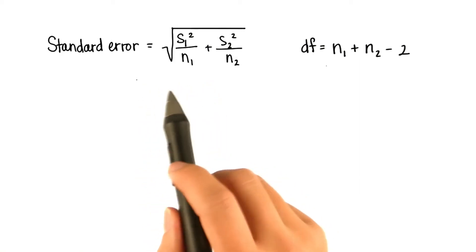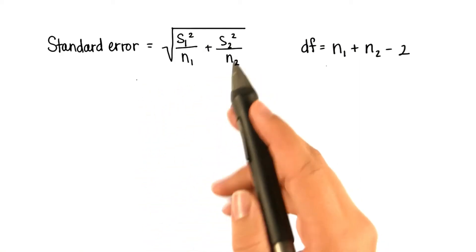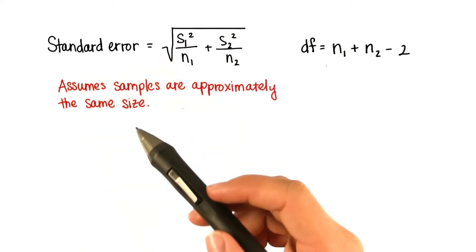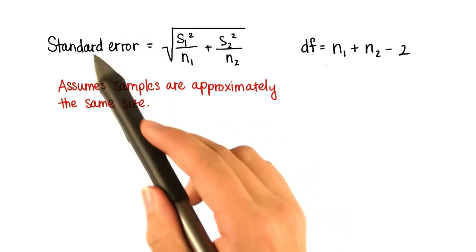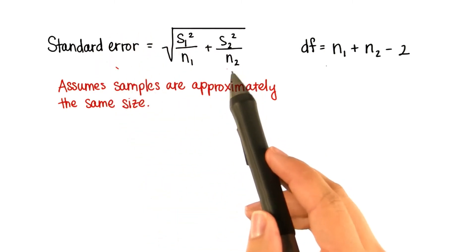The standard error we've been using assumes that the samples are approximately the same size. We must correct for the sample size first by pooling the variances. So now we're going to slightly change the standard error that we've been using.